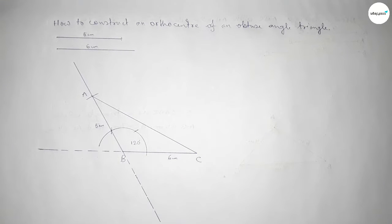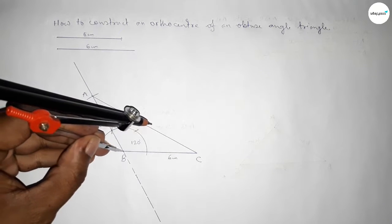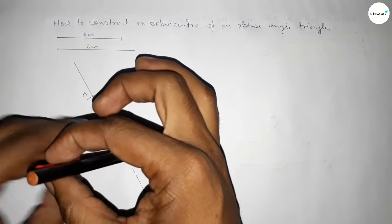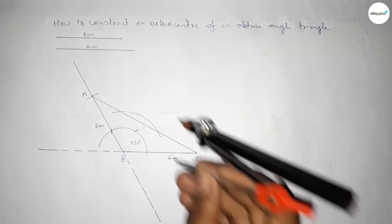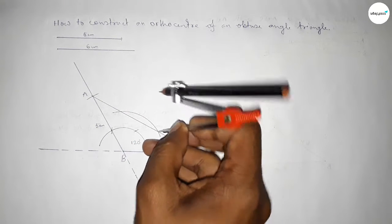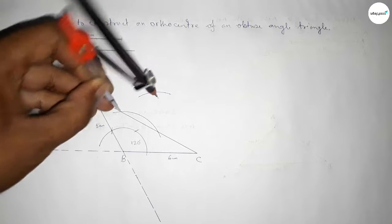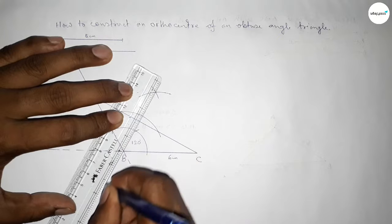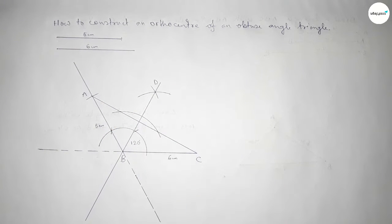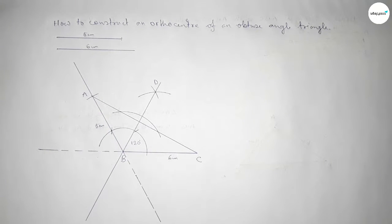Drawing a perpendicular line from point B to the line AC. Putting the compass on point B and taking any length, drawing an arc, then taking greater than half of that and cutting here, then again cutting on the other side — both curves intersect at a point. Joining this perpendicular line and marking point D.